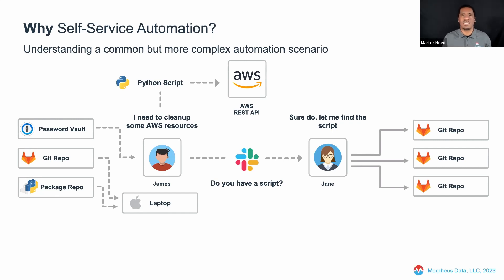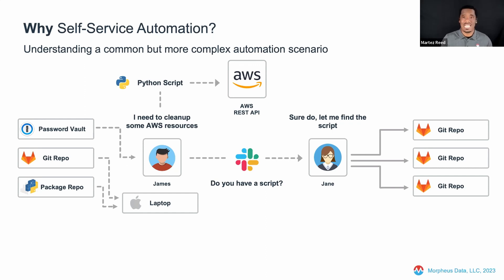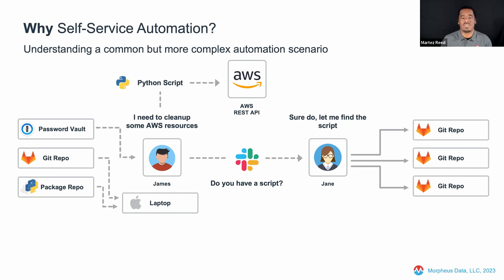The challenge we see is that there are a number of steps involved in the process of handing off automation — even from one individual on the same team to another — that makes things extremely cumbersome. We're going to walk through how to facilitate this in the Morpheus platform to reduce that challenge of how to share automation either with an individual from another team or even a teammate who doesn't have the environment set up to run or execute it.